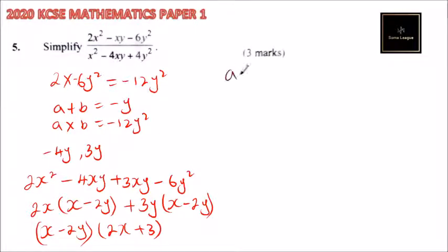We have a plus b should give us minus 4y. That is this constant, because we have x as the variable and we're considering y as a constant. And a multiply by b should give us the constant, which is 4y squared.